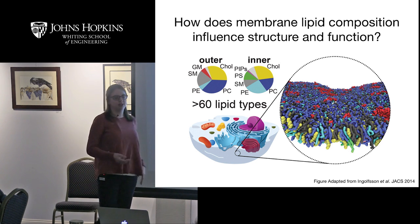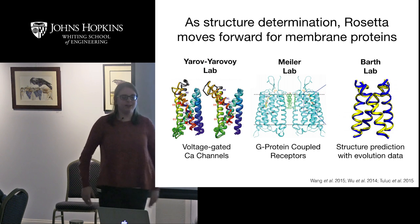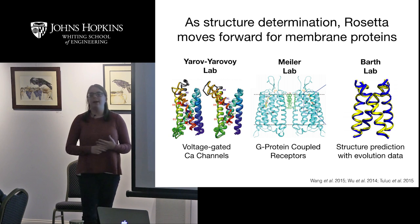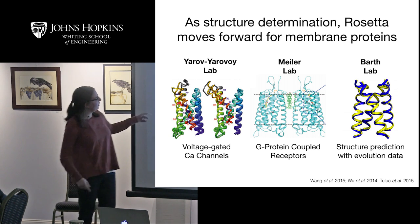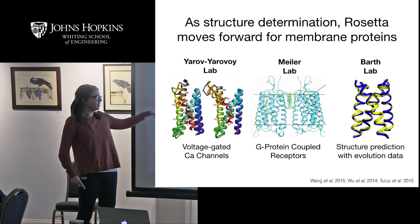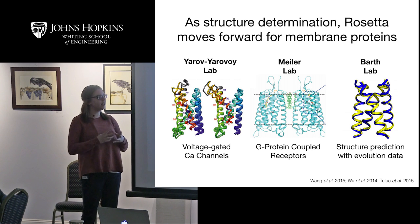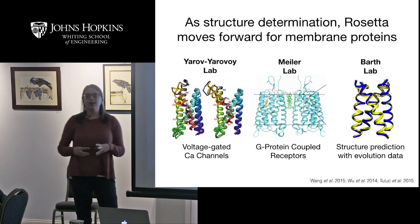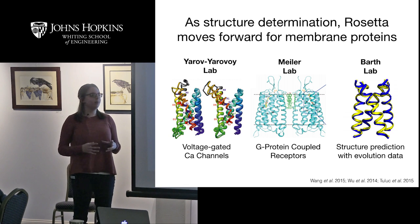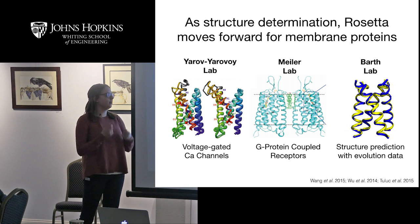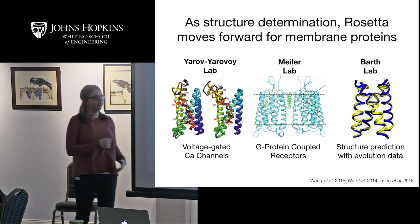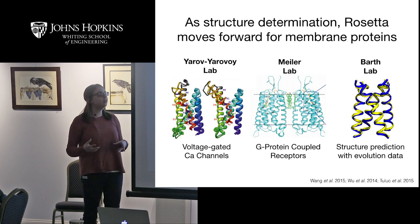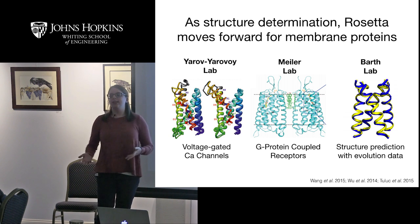There's a lot of work throughout the Rosetta Commons where people are asking questions about membrane proteins. On the left-hand side is a voltage-gated calcium channel in two states — inactive and active — where Rosetta was used to model those different conformations in combination with experiments. The center shows work studying G-protein coupled receptors, which are important for signaling, with Rosetta used to figure out which mutations are important for ligand binding. On the right-hand side is another Rosetta algorithm using this membrane protein functionality to predict structures by incorporating additional evolutionary data.